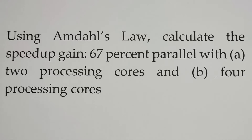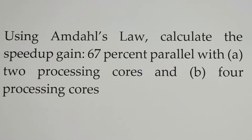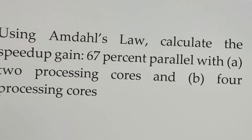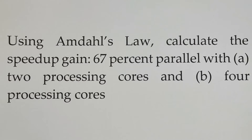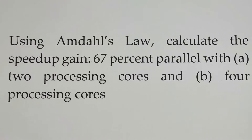For this example, using Amdahl's Law, calculate the speed gain. We have 67% parallel — letter A with 2 processing cores, and letter B with 4 processing cores. Let's start solving.